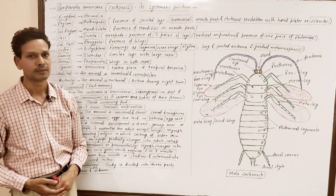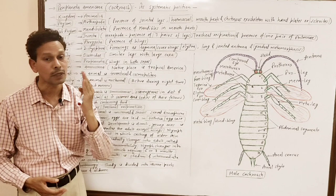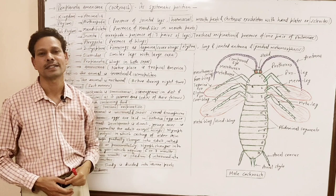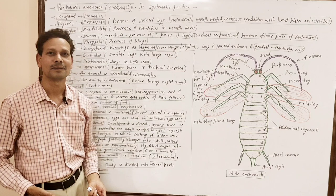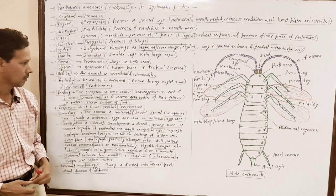The interval between two successive molts is named stadium. The nymph undergoes about six or seven molts, requiring about 12 months — one year. The stages of the molts are named instars. In each molt, the outer skin — exoskeleton — is replaced by a new one. This is all about the morphology of cockroach.